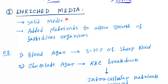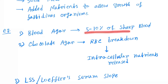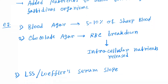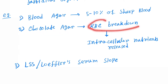Enriched media is solid media. Added nutrients allow growth of fastidious organisms. The first example is blood agar, which is produced by adding five to ten percent sheep blood. Next is chocolate agar, which is made by heating blood agar so the RBCs break down.